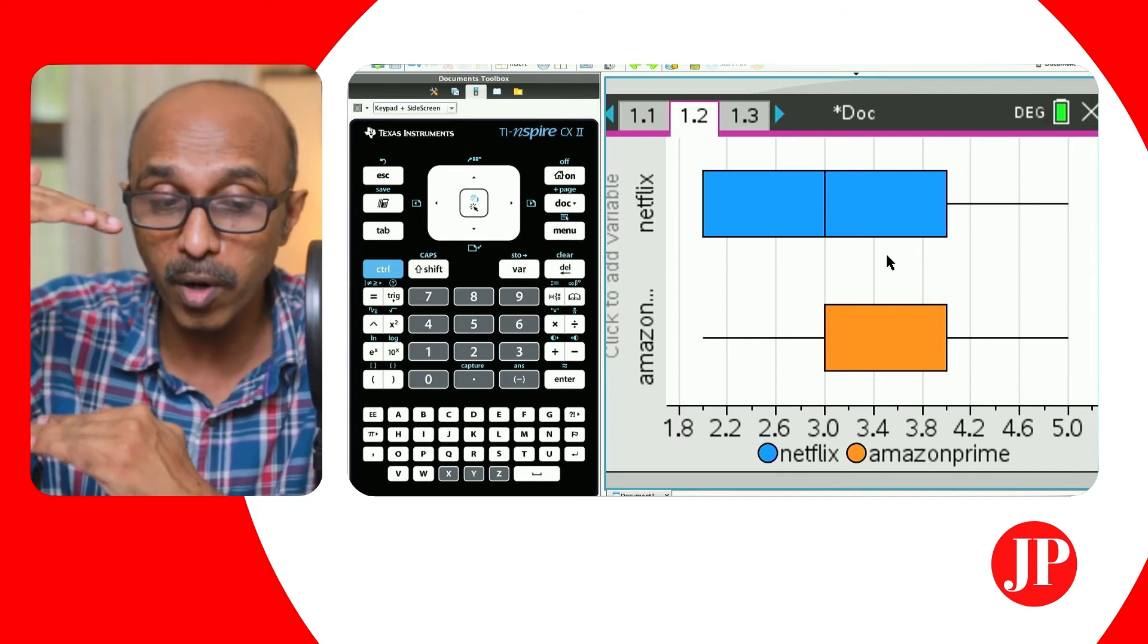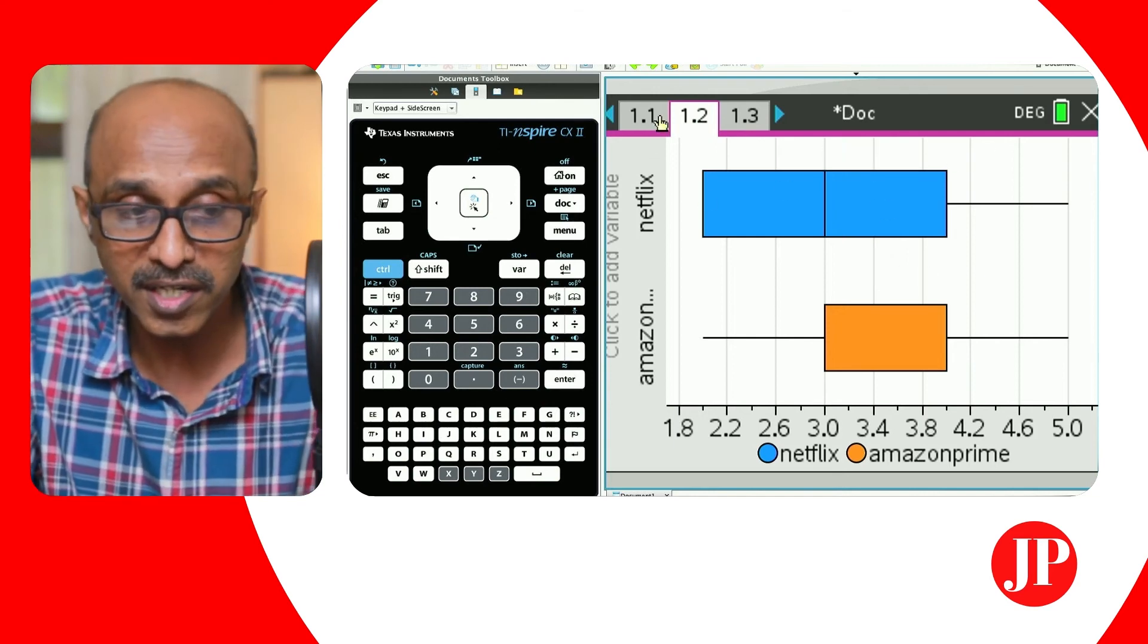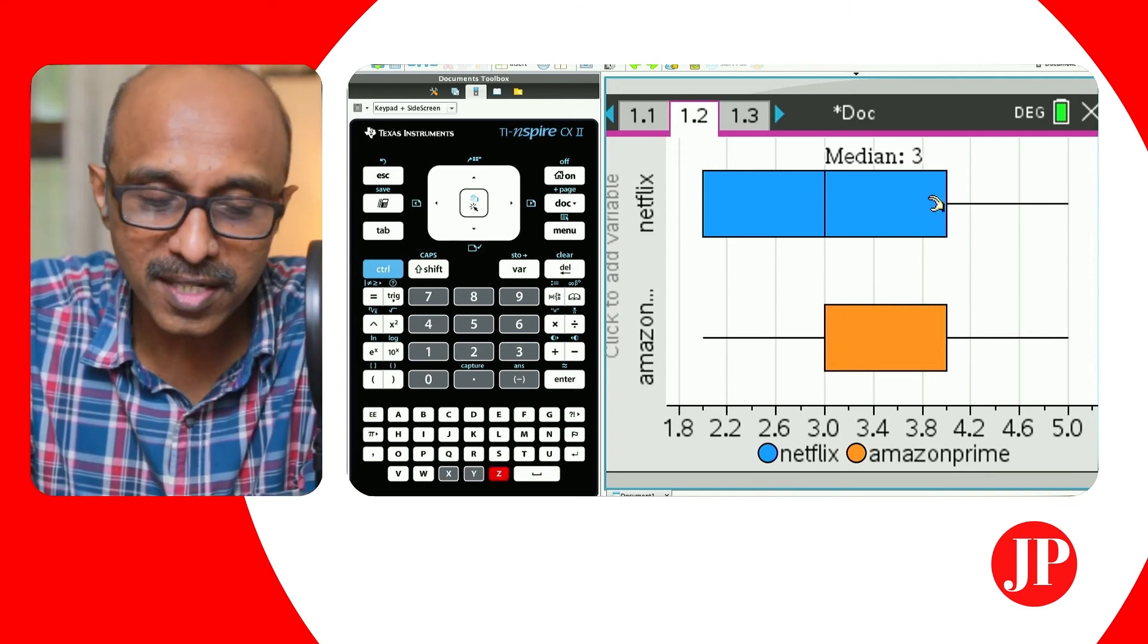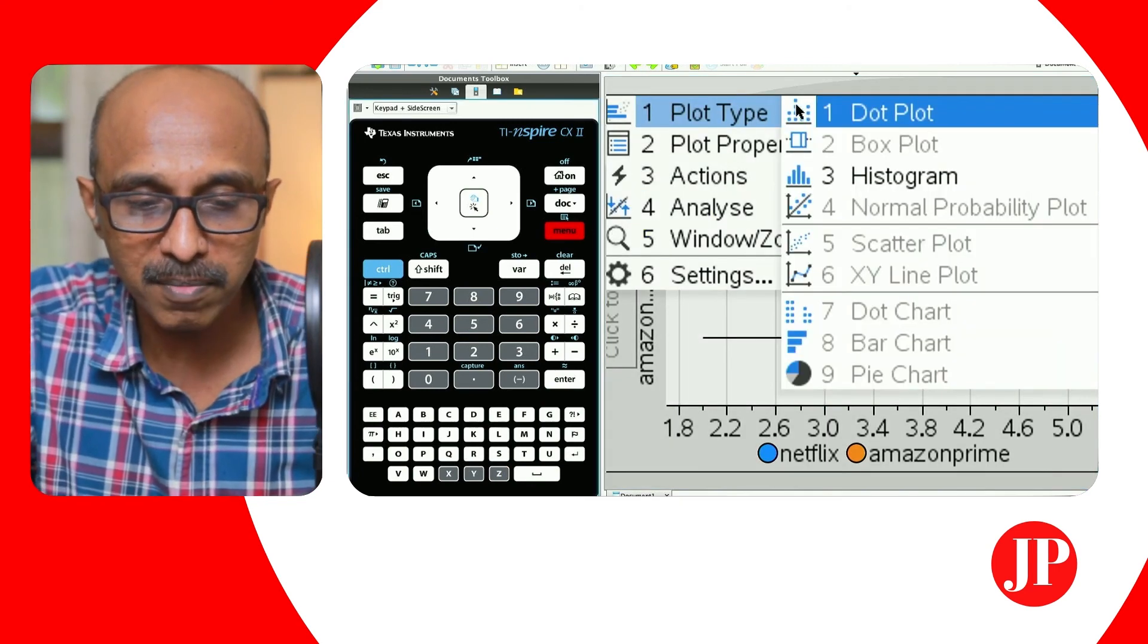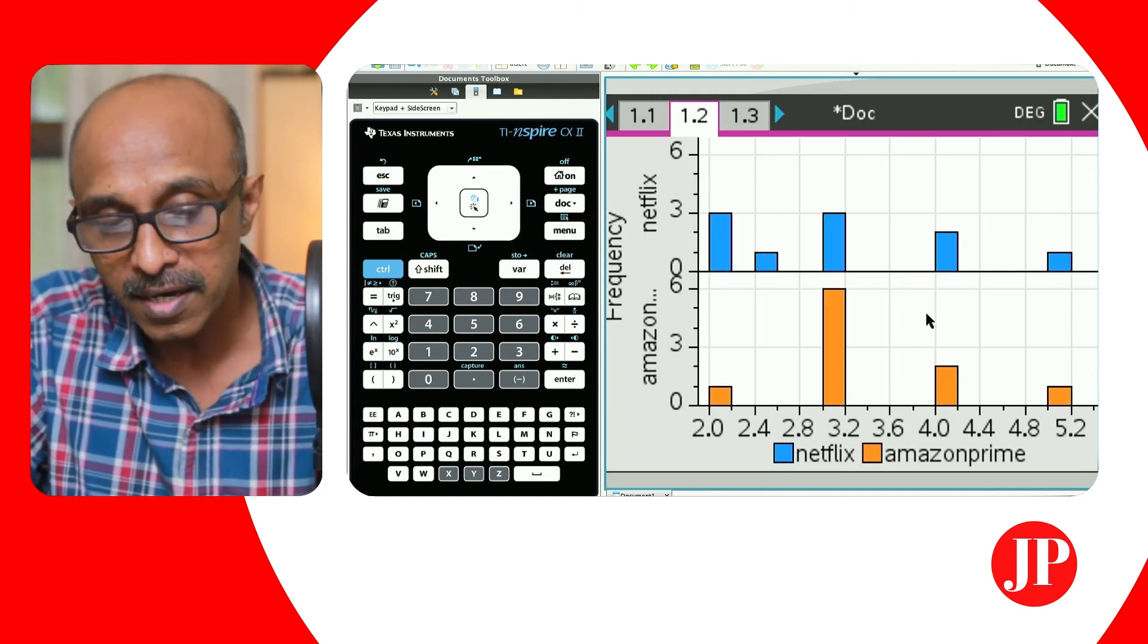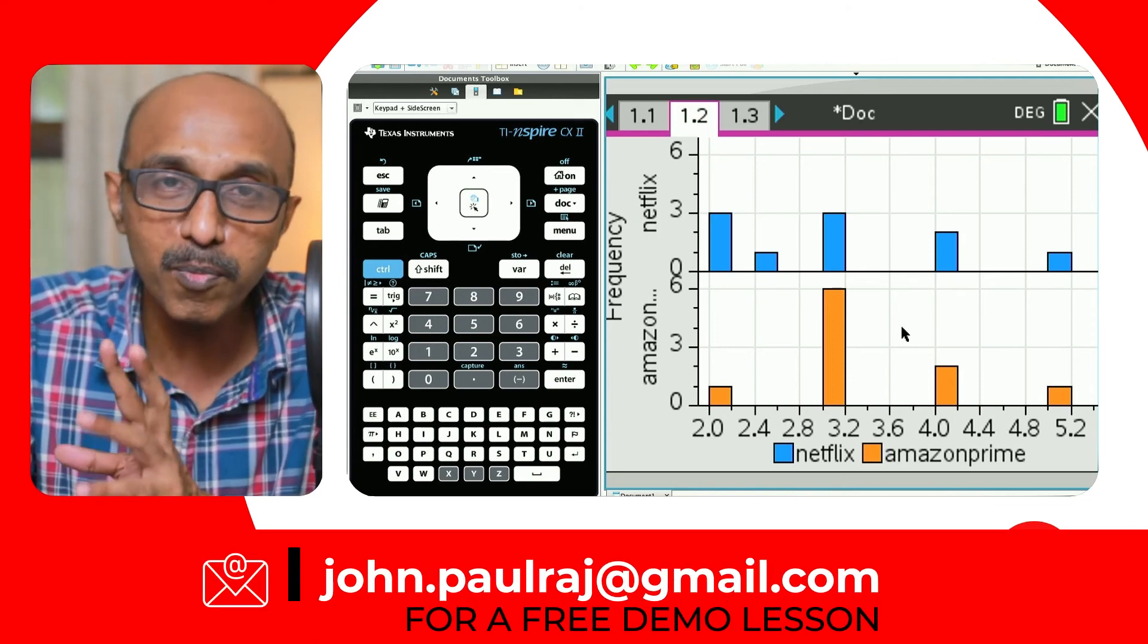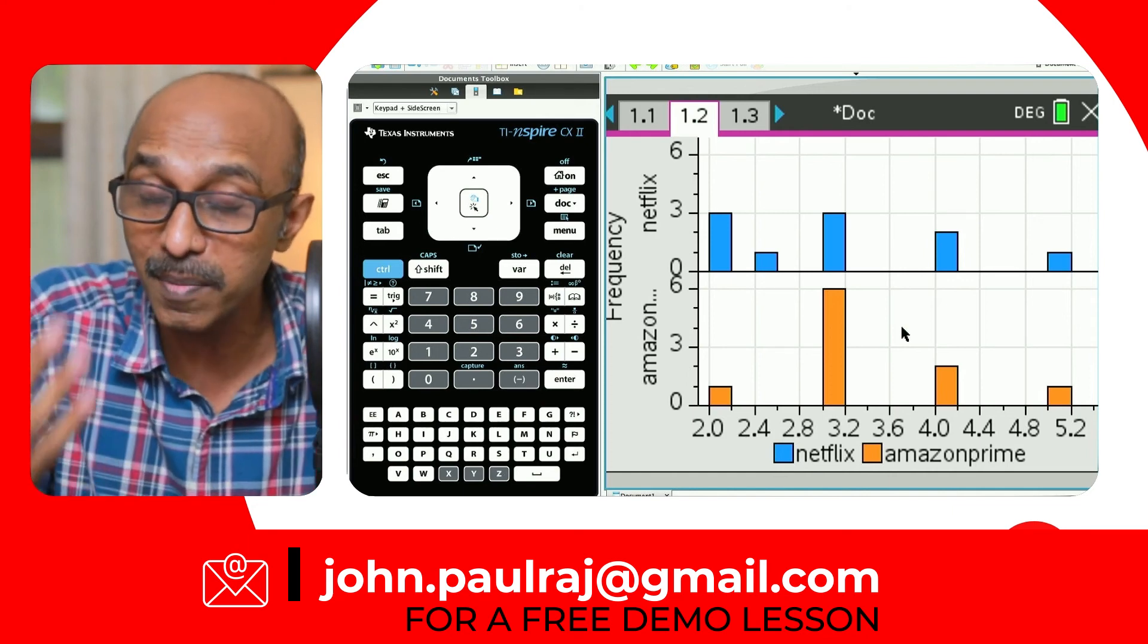So the three different box plots, box and whisker plots would be stacked up one over the other. So you're going to add an X variable and Amazon Prime is what you're choosing. And just like that, you've got your two different box and whisker plots right there for you to compare and you can make inferences. You can take a screenshot, bring it to your presentation and talk about your inferences just like that. And so in the same way, if you wanted to make a similar comparison using histograms, you can just go to menu and you can change the plot type from a box plot to histogram.